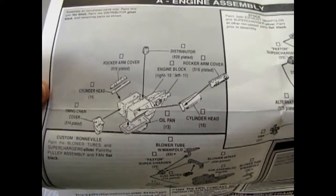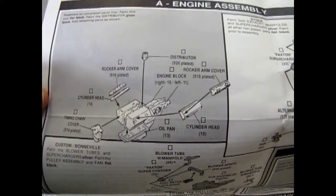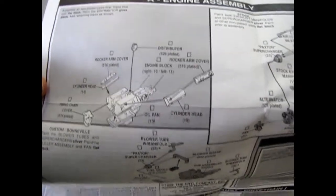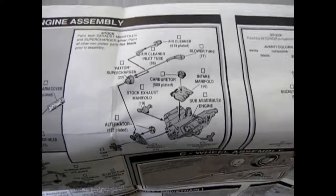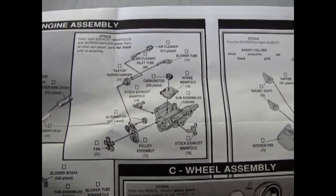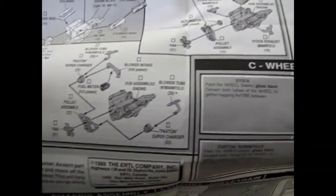Okay, so here's all our engines. So this is the basic engine going together. Assemble all non-plated parts. Paint this unit flat black. Paint the distributor gloss black. Okay, so there's that. So then here is the stock engine, and you do get one supercharger on there, single Paxton with a blower tube. So this car would have been quite fast in the day with the blowers.